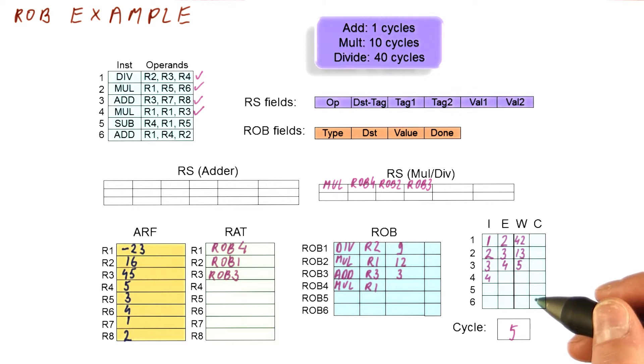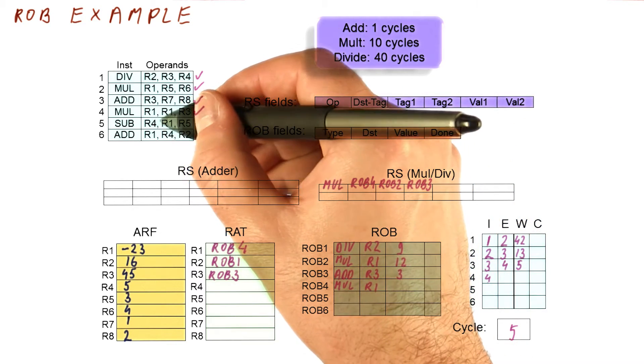In cycle five, two things will happen. One, this instruction will write its result. And two, I'll try to issue the next instruction if I can. We can do that in either order. Let's say that we do the issuing first this time.